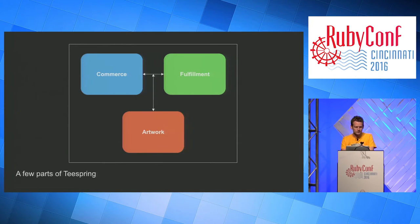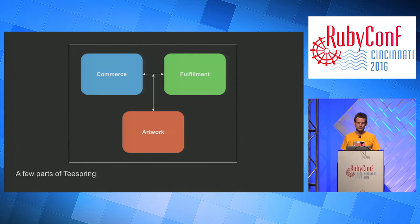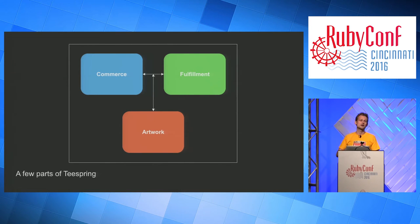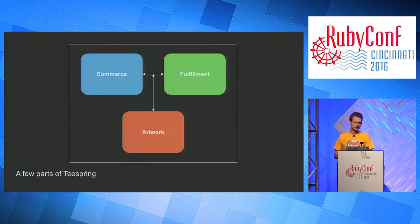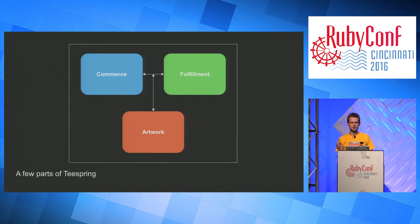Our Rails app is divided up into a few engines. By 'commerce' I mean the buyer experience — people who go to teespring.com and are searching, browsing, looking at categories, getting recommendations, buying things. Then there's the creator side — as a designer, you're uploading your image, managing your campaign, setting how long it runs, setting prices. There's also a whole domain around artwork — some of that is in the Rails app. We also have some artwork-related things written in Go — we have an image mock-up generator called Van Gogh, because it's apparently a law that if you make a Go repo you have to put 'Go' in the title.